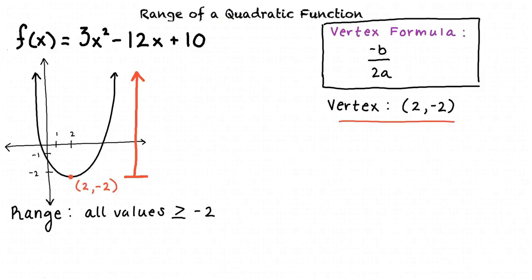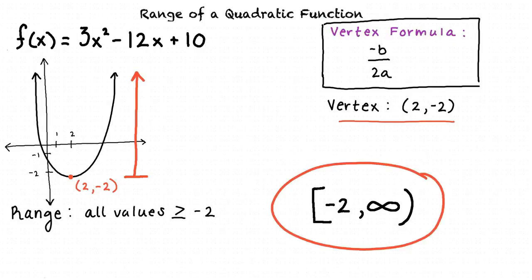How can we write the range in interval notation? Good question. The y values of this function span from negative 2 all the way to positive infinity. So we can write negative 2 comma infinity. We will put a bracket on the left side of the negative 2 to indicate that the range includes the negative 2. And we will put a parenthesis on the right side of the infinity sign to indicate that the range does not include infinity, since we can never actually reach infinity.